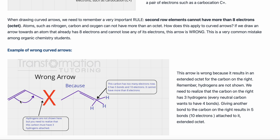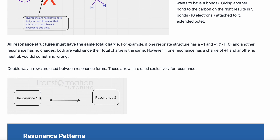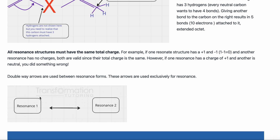If I move this double bond over, that means this carbon now has five bonds, which means it has ten electrons — every bond has two electrons. So this arrow is wrong because it gave this carbon an extended octet. We always have to make sure our curved arrow does not give carbon, nitrogen, oxygen, or other second row elements more than eight electrons.